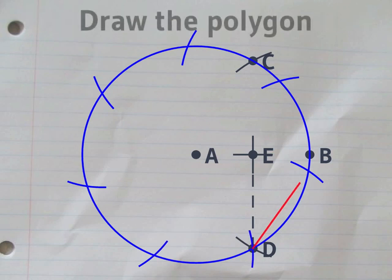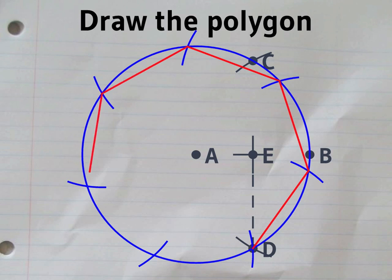Mark off that distance around the circle, join the dots, and it will look like you've done the impossible with a ruler and compass.